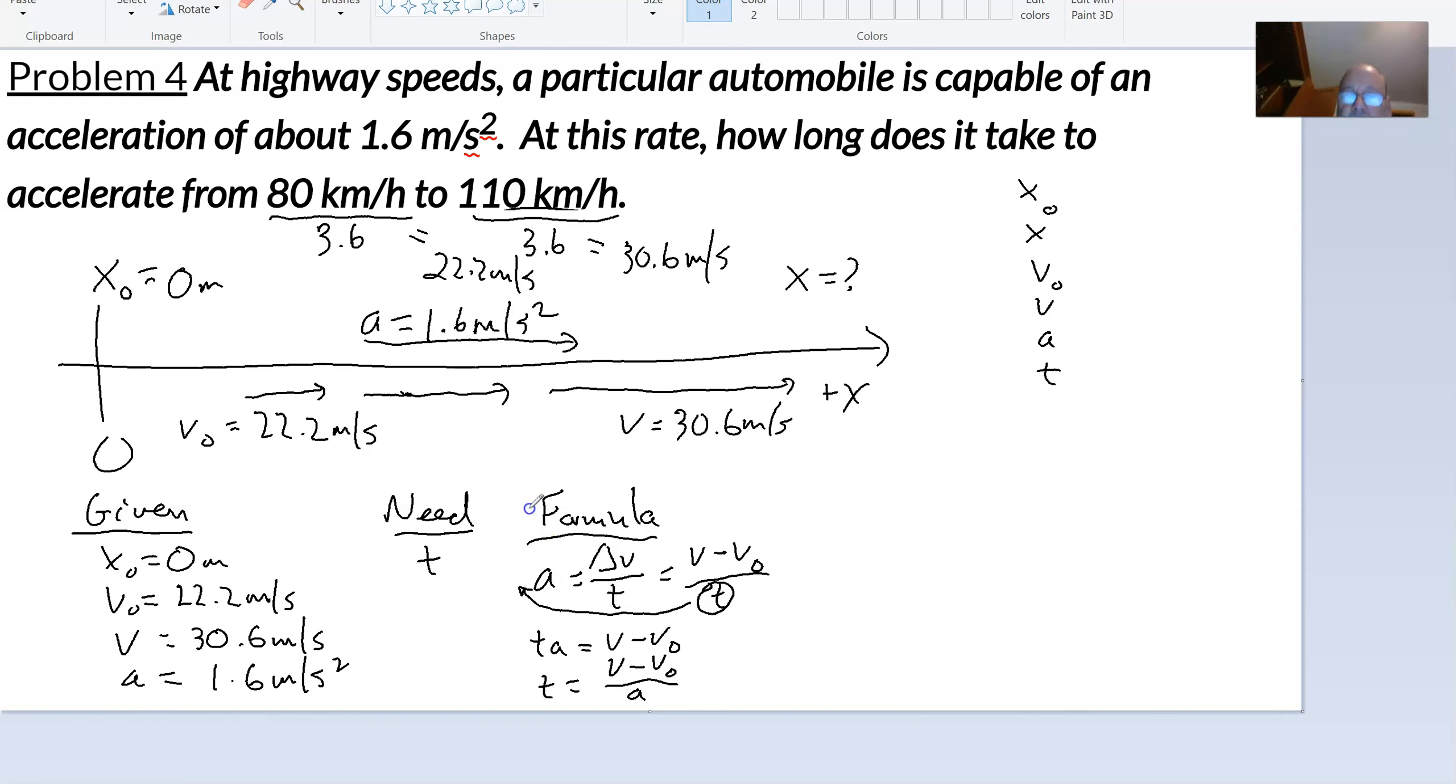But as long as you need to, certainly write out all of those intermediate steps. And then now we've got a formula we can just plug our values into. So I write out solve: t equals my final velocity was 30.6 meters per second, my initial velocity is 22.2 meters per second, and then we're dividing by 1.6 meters per second squared. And this gives us a time of 14 seconds.